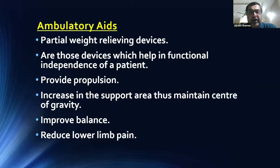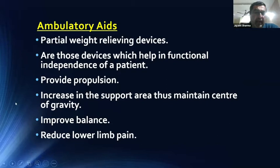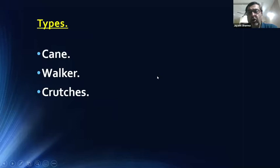Ambulatory aids are partial weight-relieving devices that help in functional independence, enabling patients to perform their ADL by themselves. They provide propulsion — gait is multiple sets of propulsion to move ahead. They increase the support area, maintaining the center of gravity to decrease the chances of fall, thereby improving balance and reducing lower limb pain. They can be either a cane, a walker, or a crutch.